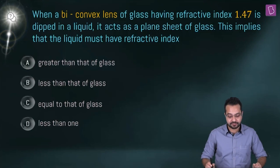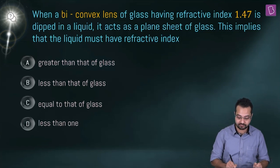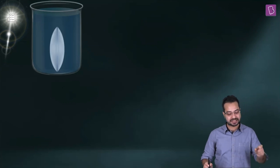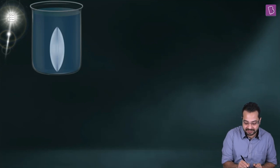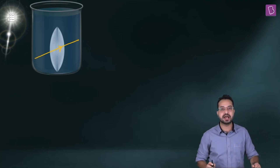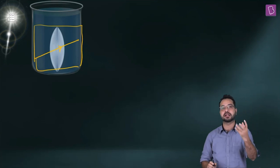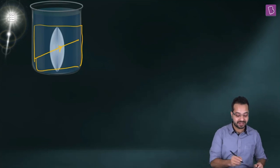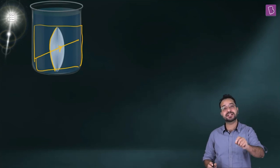When a biconvex lens of glass with refractive index 1.47 is dipped in a liquid, it acts as a plain sheet of glass. For the lens to act as a plain glass slab, light must pass through undeviated. This means no refraction can take place at the surfaces.